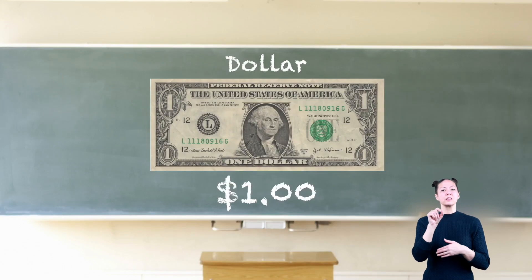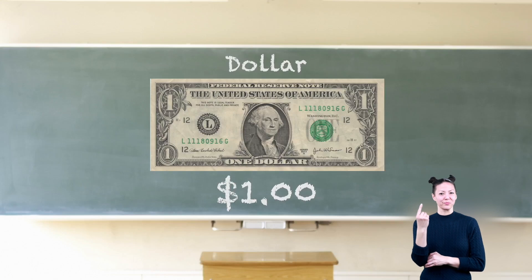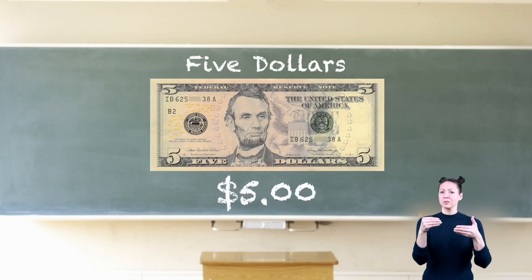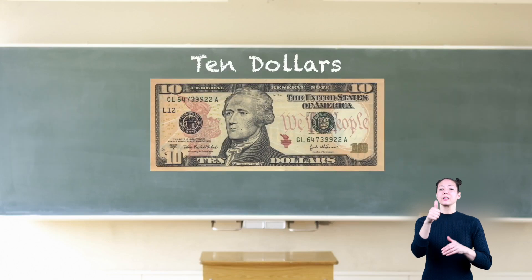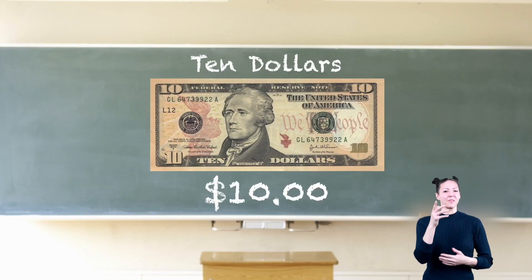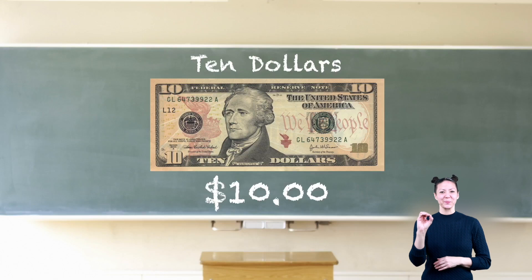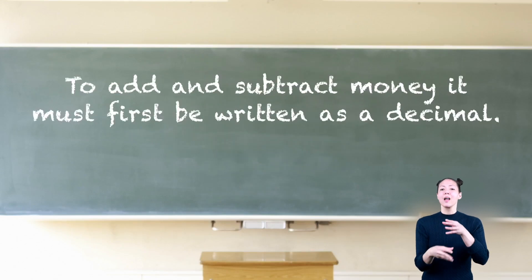This is a dollar. Its decimal point amount is 1.00 or one dollar. This is five dollars. Its decimal point is 5.00. And here's ten dollars. Its decimal point amount is 10.00.